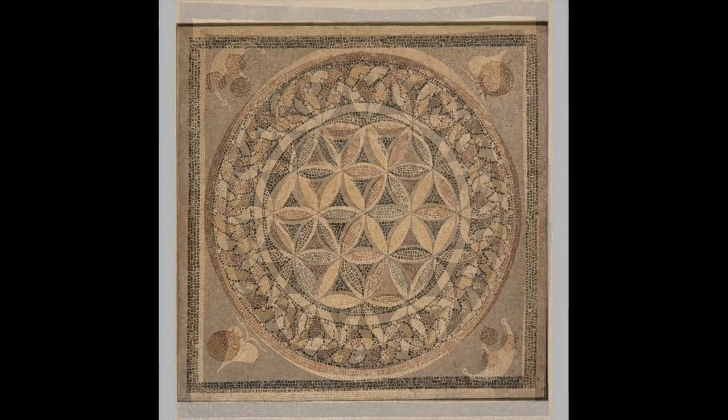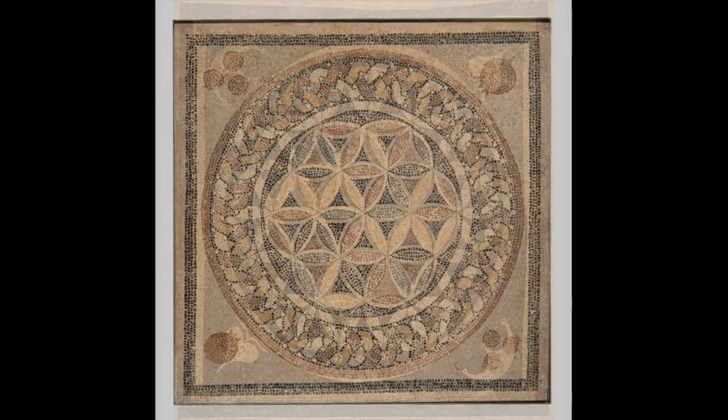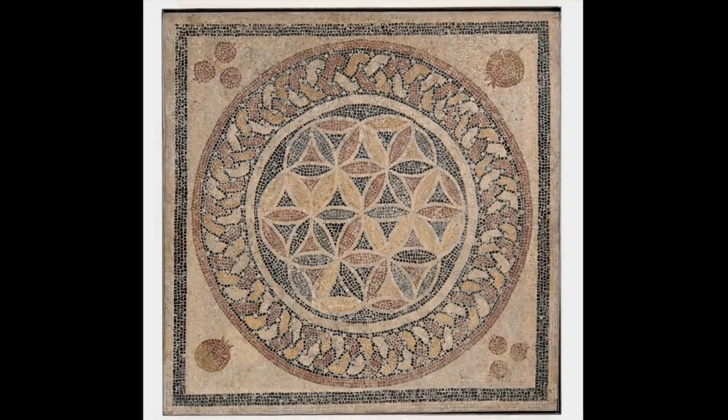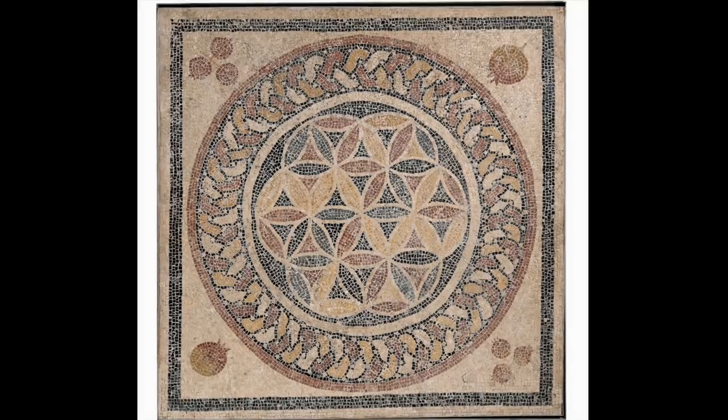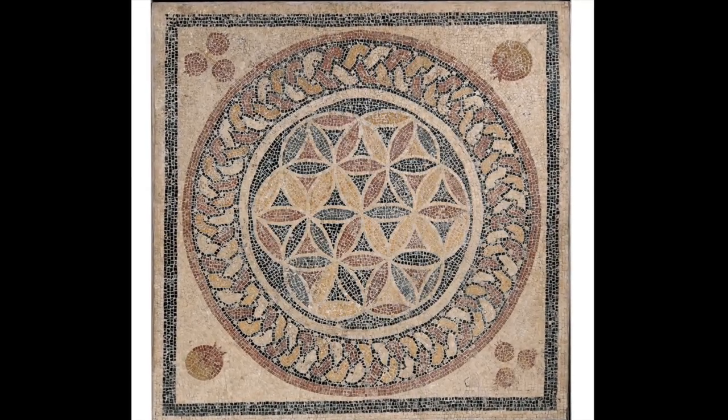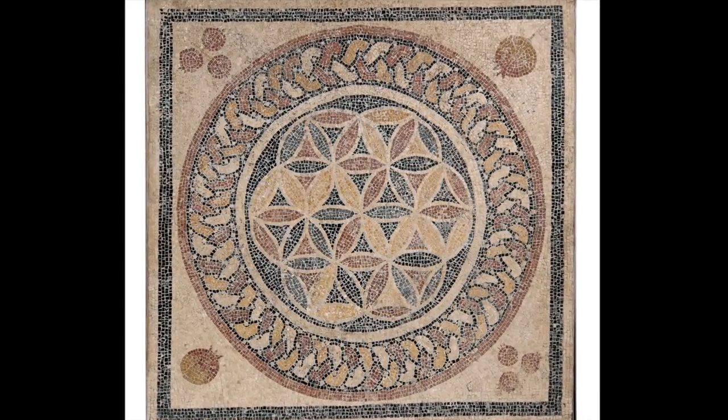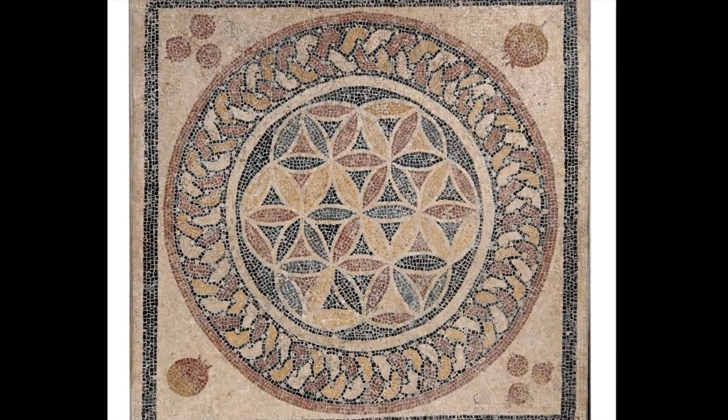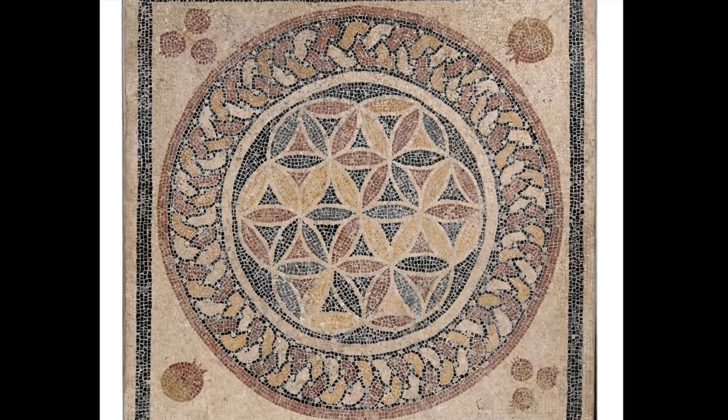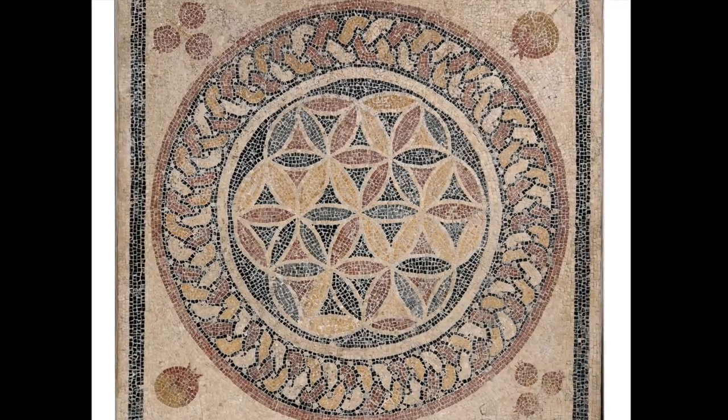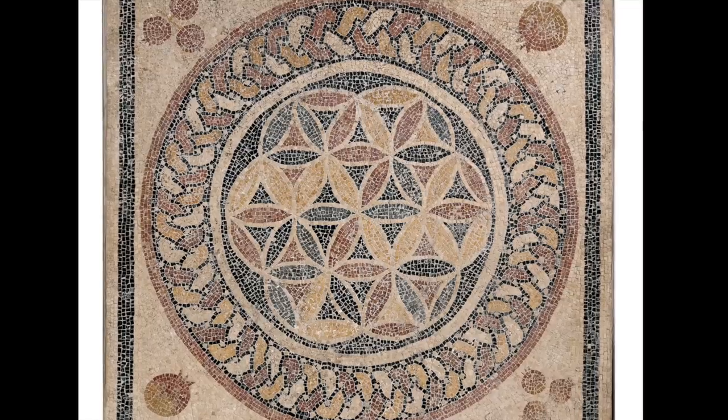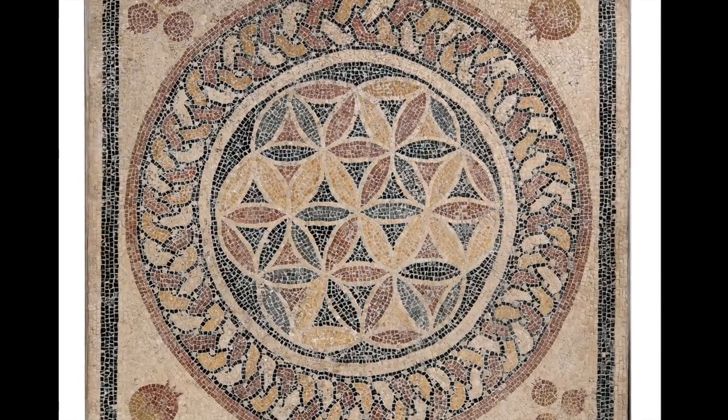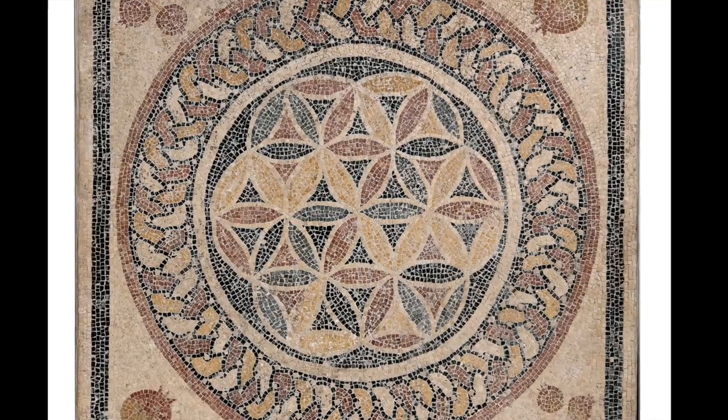Herod the Great, 73 BC until 4 BC, built a palace within the fortress of Herodium, about 12 kilometers south of Jerusalem. This was most likely where Herod lived. He decorated his rooms with mosaic floors and elaborate frescoes. In the tepidarium of the Roman bathhouse at Herod's palace, we find this mosaic of the Flower of Life 7 circle.